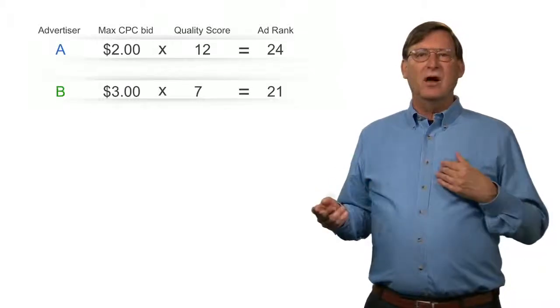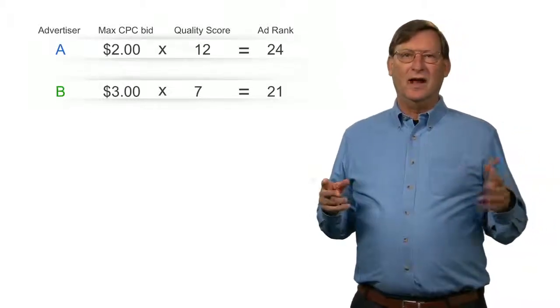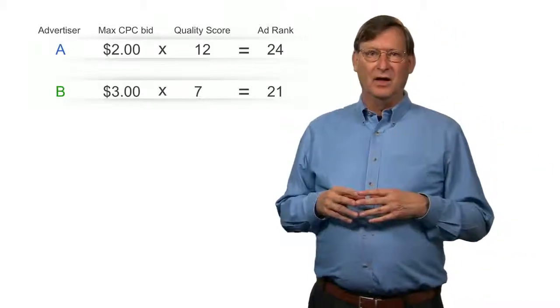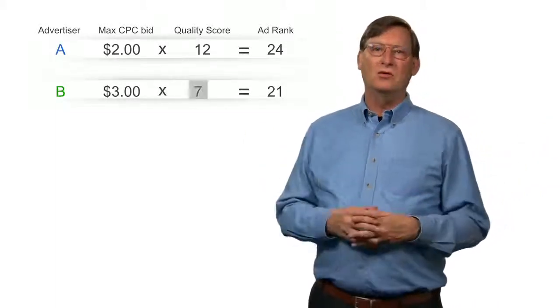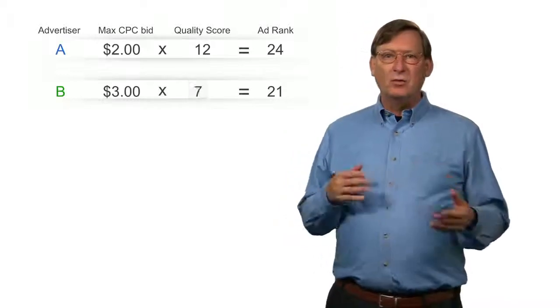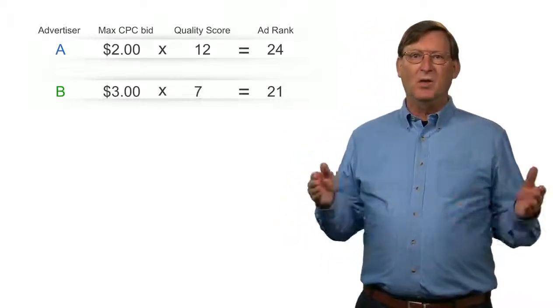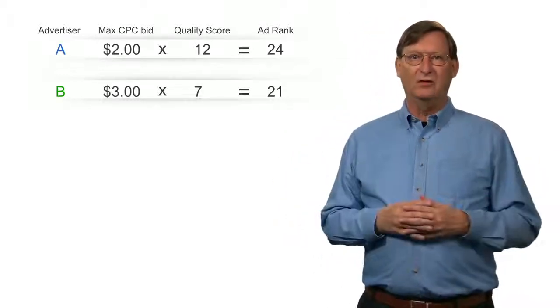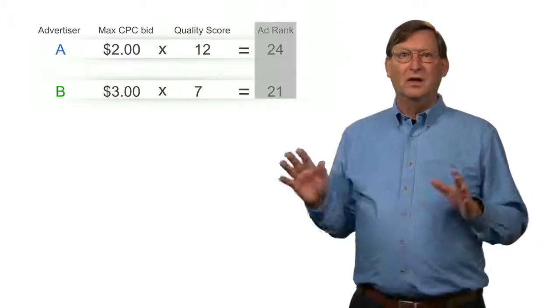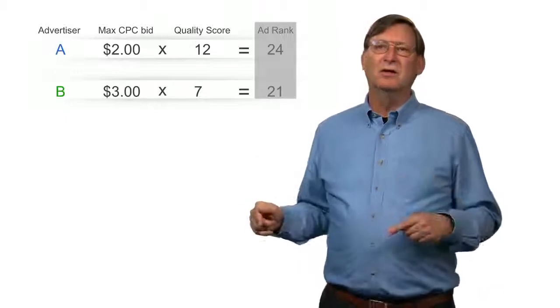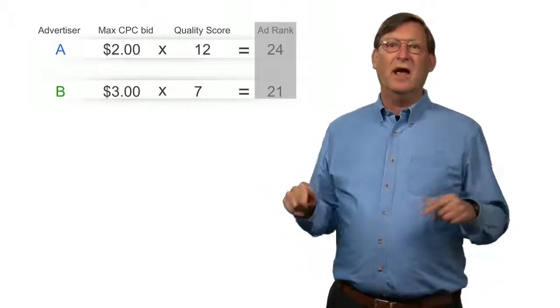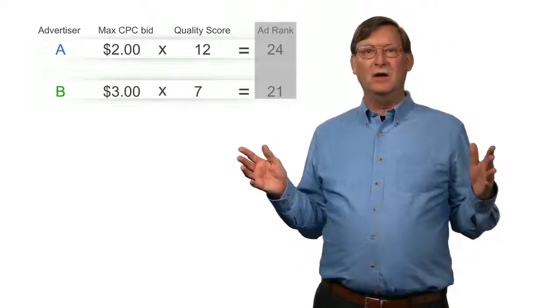Suppose we have two advertisers, A and B, who are bidding $2 and $3 for a cost per click ad in a particular auction. Advertiser A has a quality score of 12, while advertiser B has a lower quality score of 7. So by multiplying the max CPC bid by the quality score, we get each advertiser's ad rank. Now in this example, notice that even though advertiser A's bid is lower than advertiser B's, his ad rank is higher because of his higher quality score.